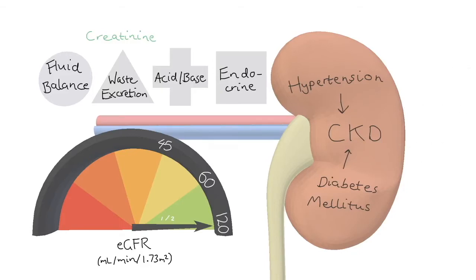GFR 60 to 45 is stage 3A, 45 to 30 is stage 3B, 30 to 15 is stage 4, and below 15 is classified as stage 5, which is also known as end-stage kidney disease.